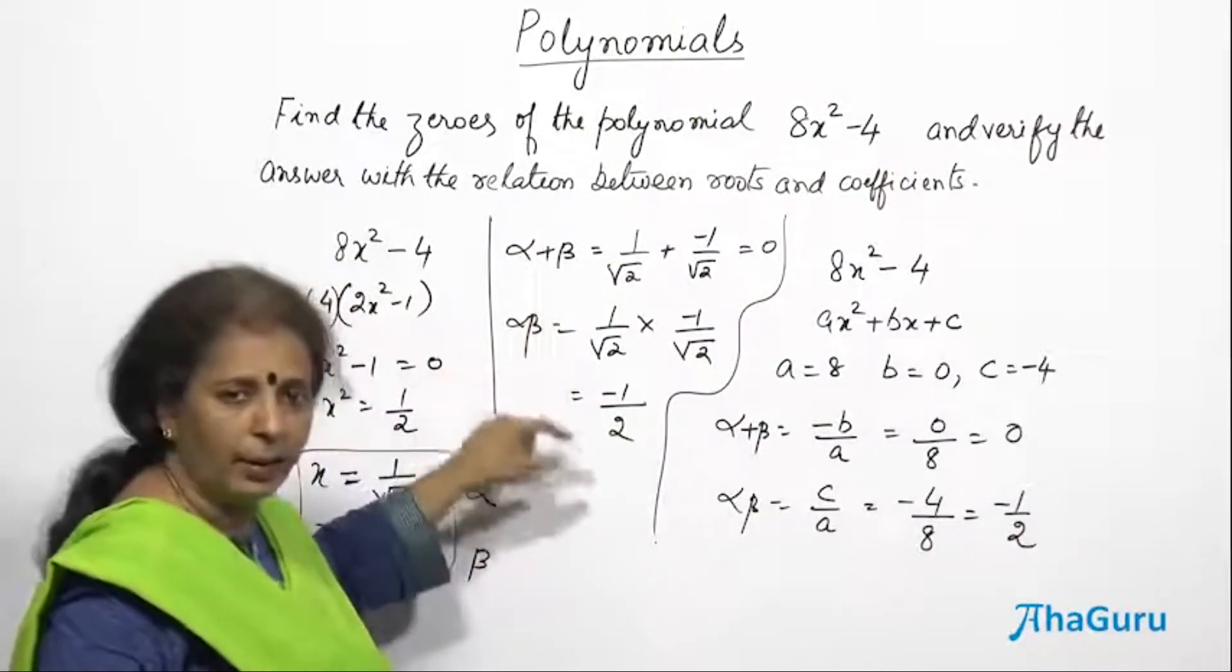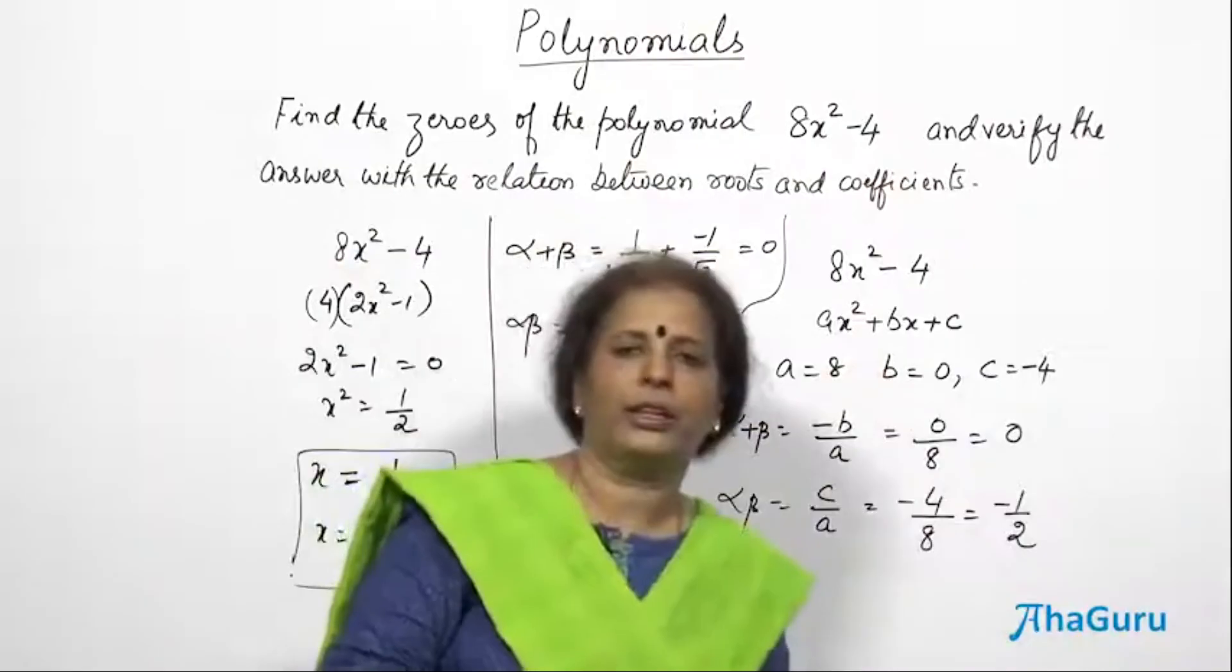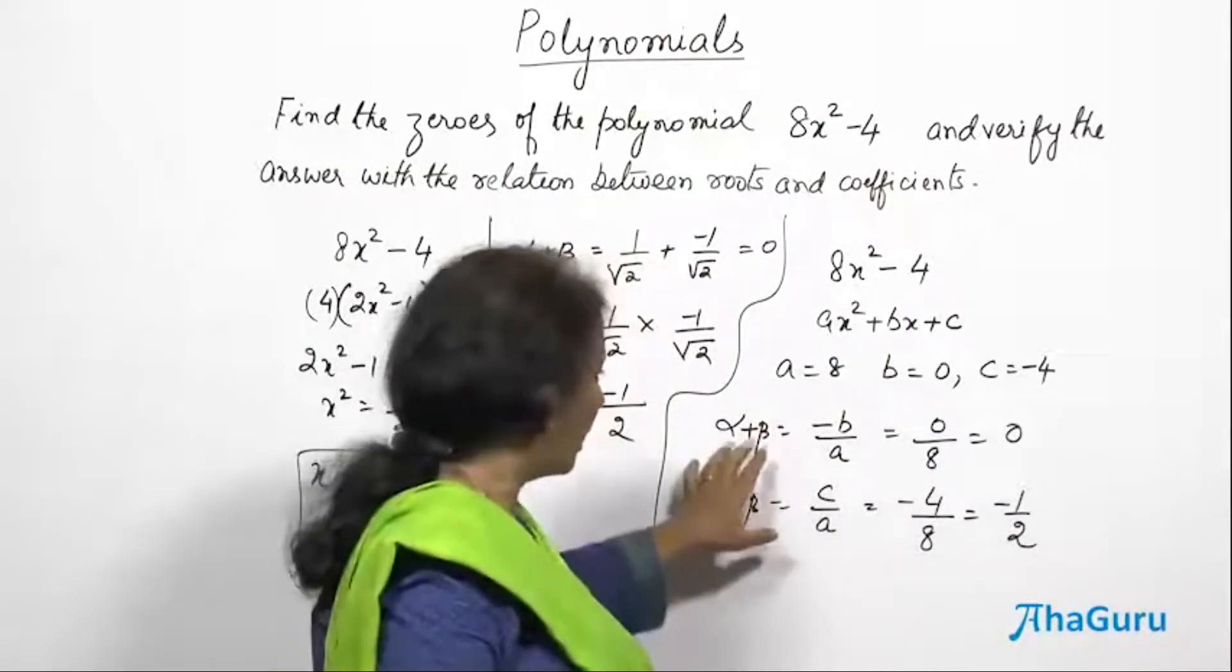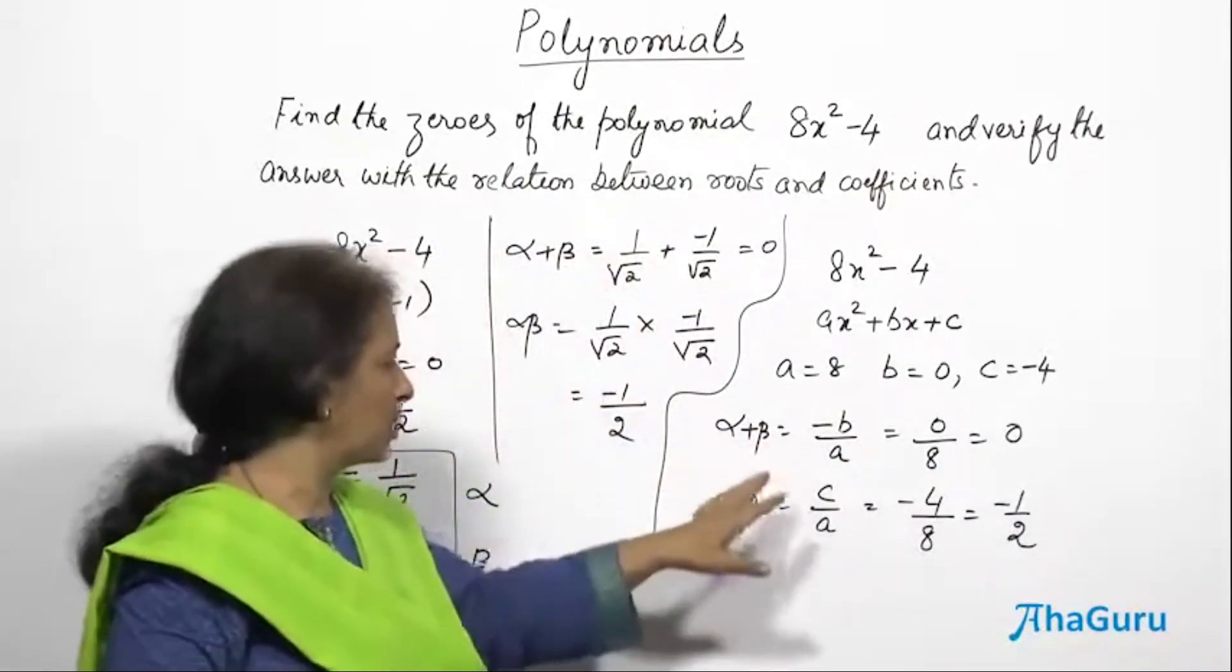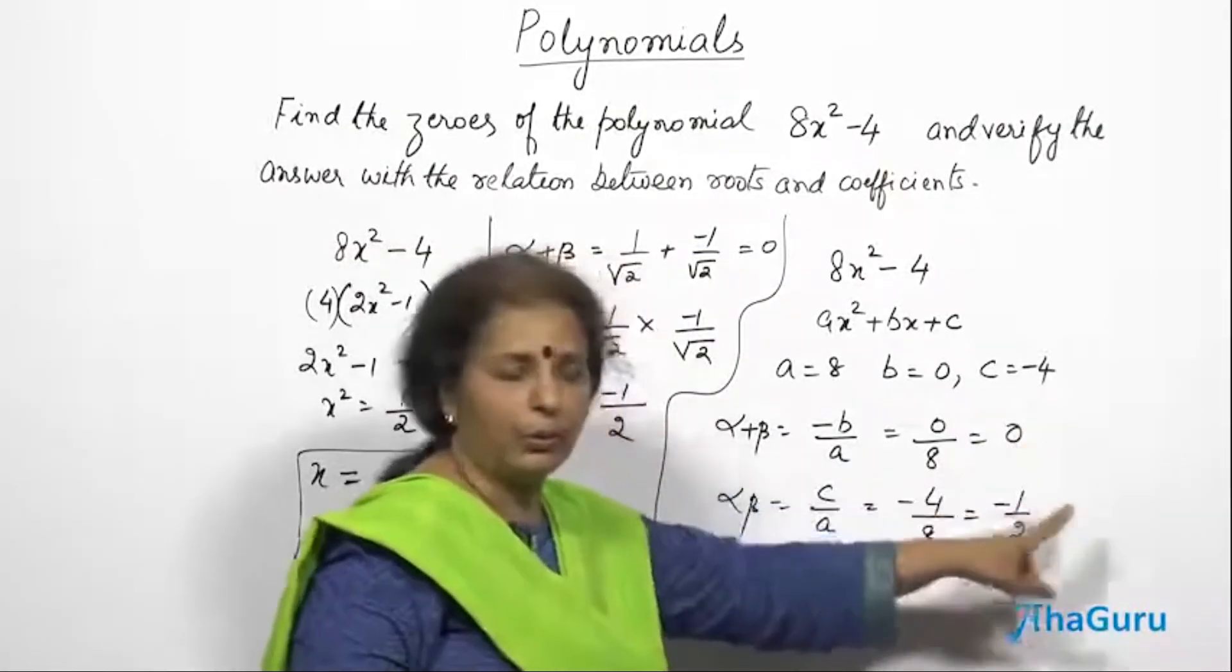So what I got by really finding alpha and beta, adding and multiplying is the same as without even trying to find alpha and beta. I have got the relationship between alpha plus beta and alpha beta. So again, that is turning out to be 0 and -1/2.